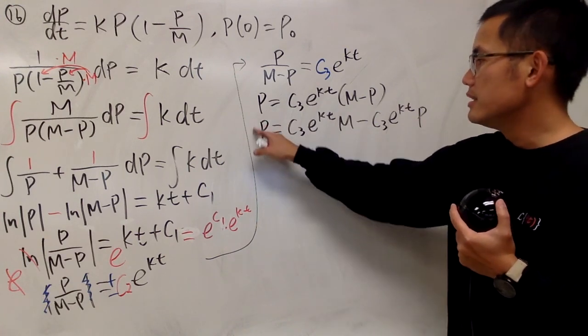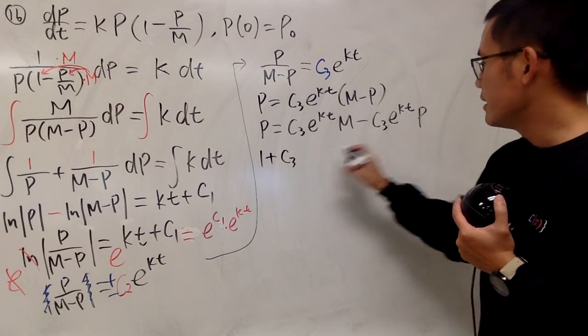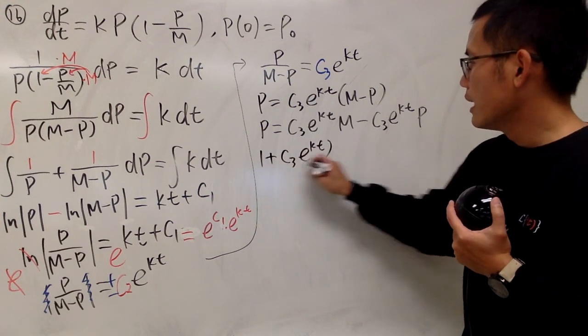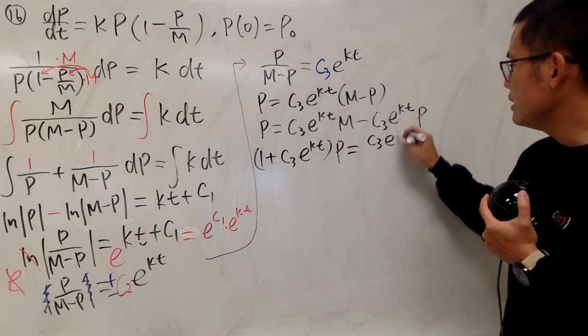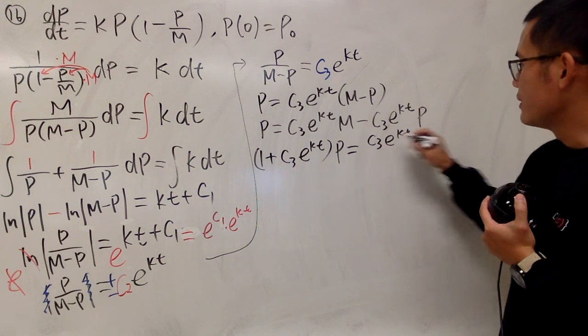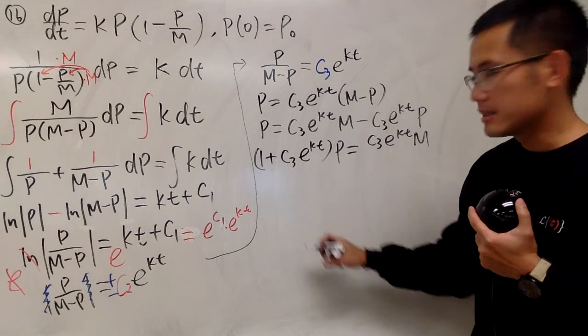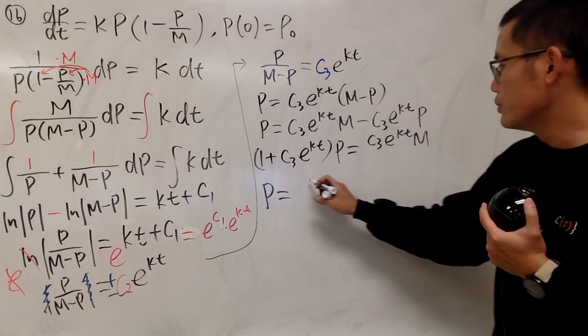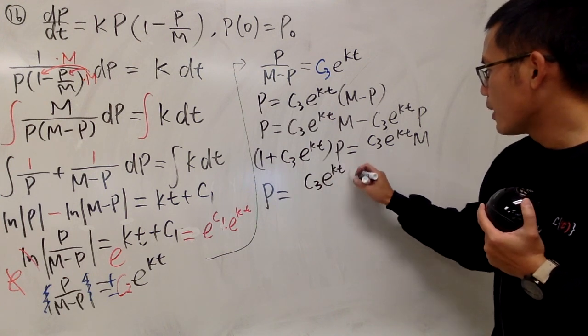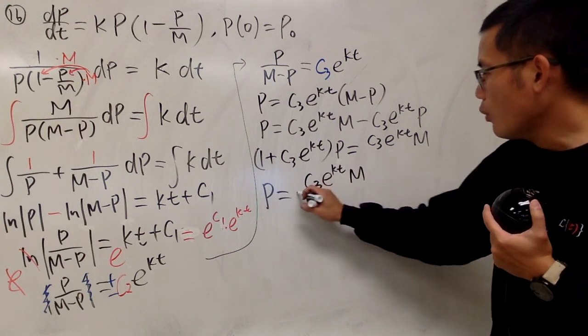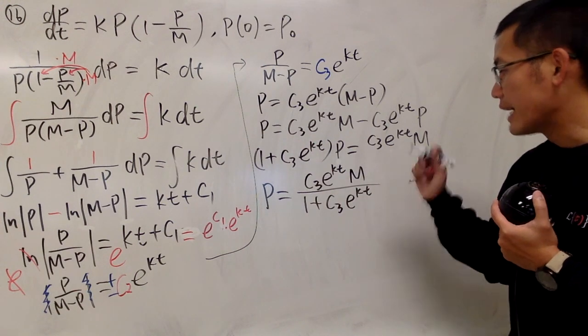Now bring this to the other side. Then both of them have p, so factor out p. This is 1. Bring this to the other side becomes positive c₃ e^(kt), and then we have the p. This equals c₃ e^(kt) m. m is not in the exponent. And finally, we can divide both sides by this. So we have p equals c₃ e^(kt) m over (1 + c₃ e^(kt)).